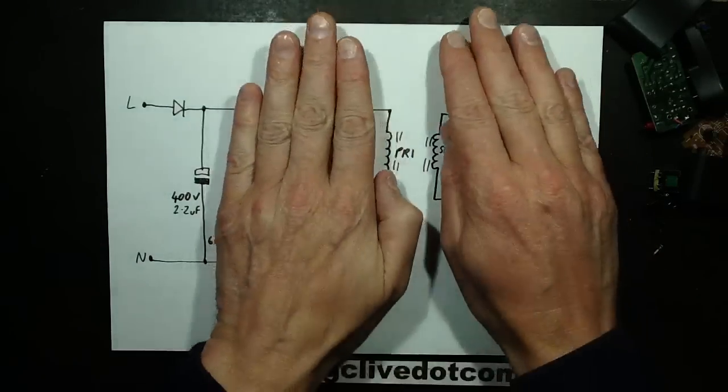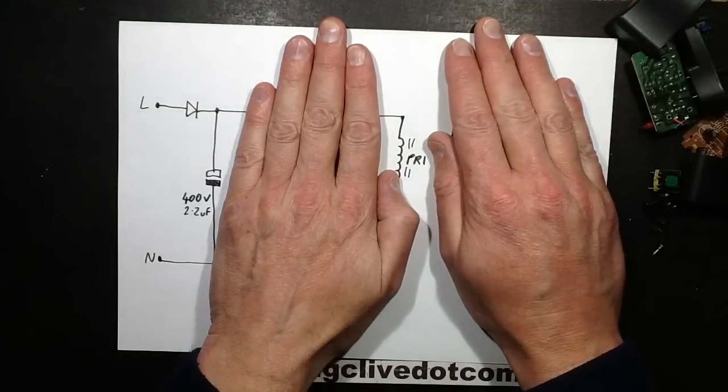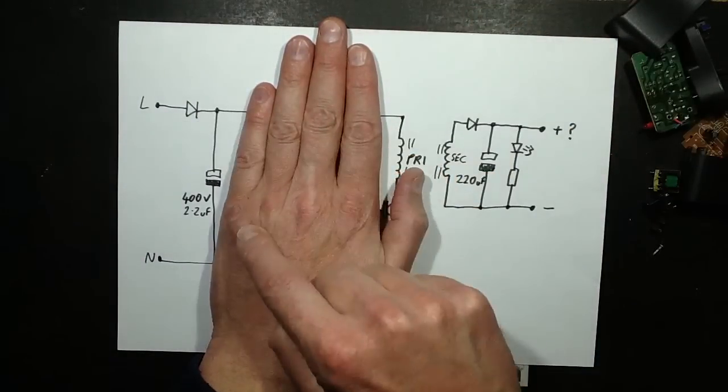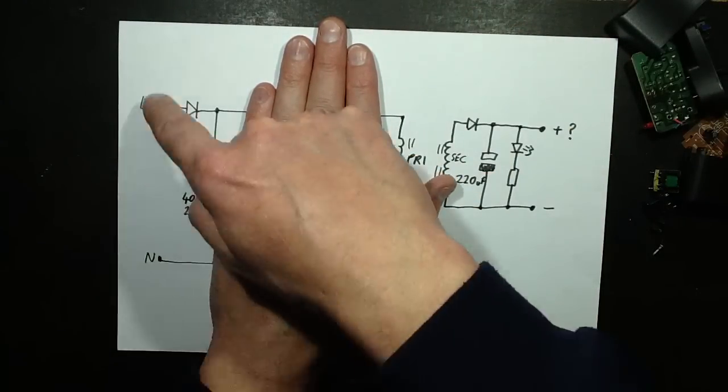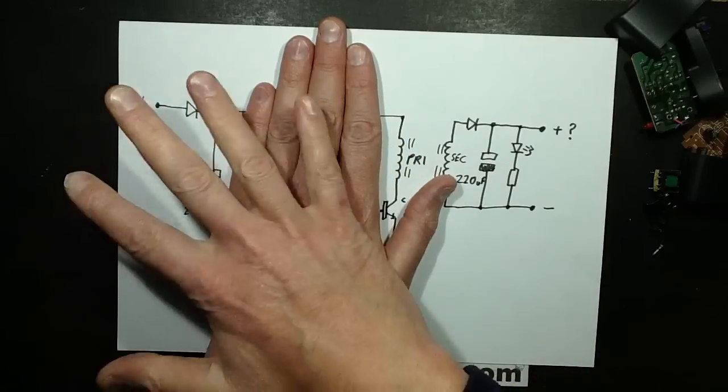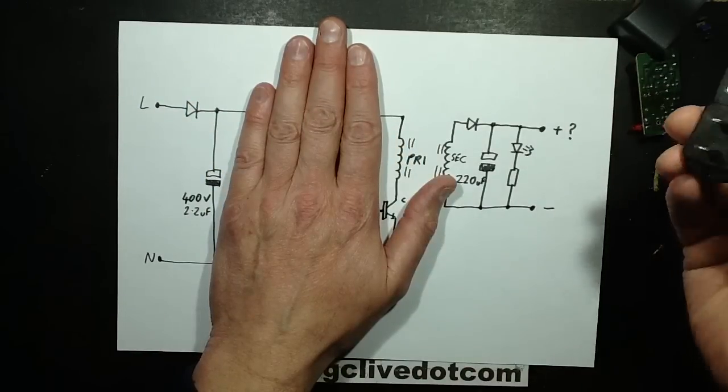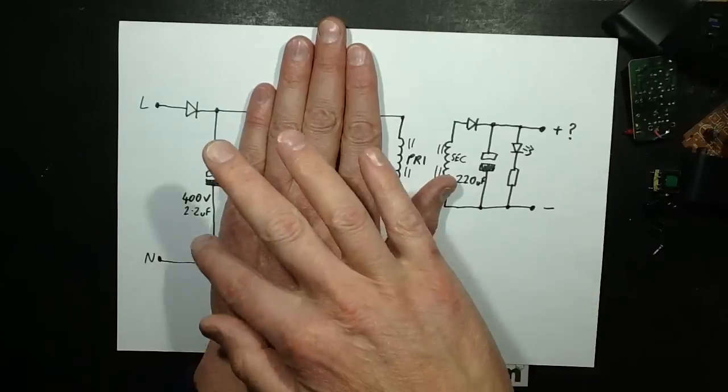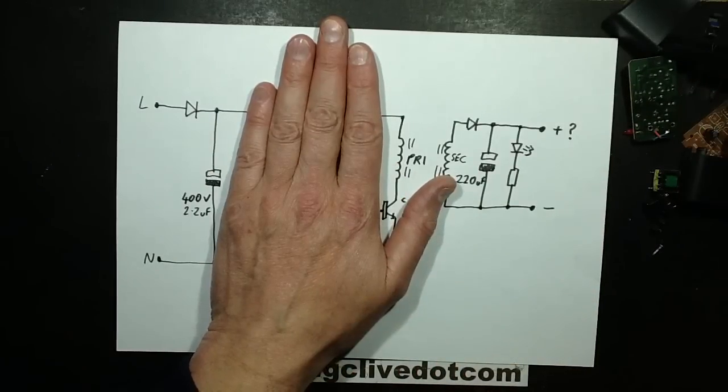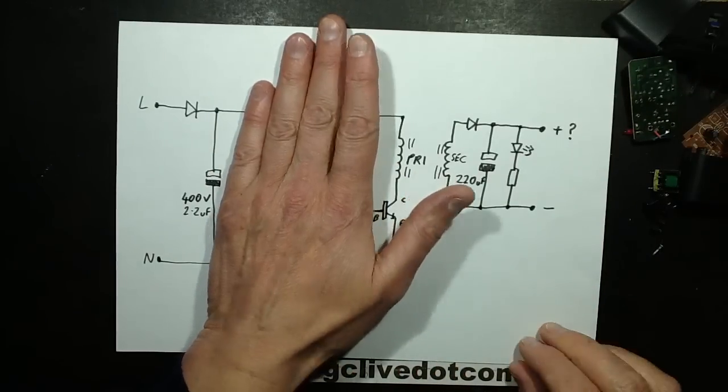Let's start with the power supply. The power supply is the diode coming in from the mains. Just ignore live and neutral really, it's just AC because this is non-polarized. This connector can go in either way around. And then it charges that dubious 400 volt 2.2 microfarad capacitor.